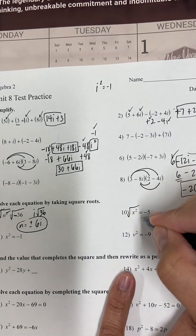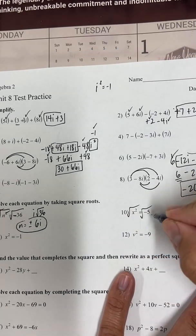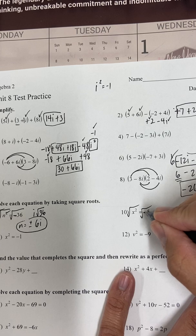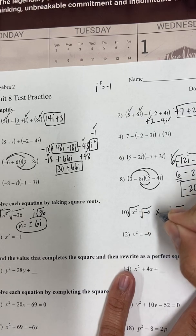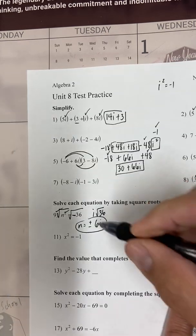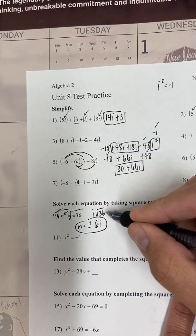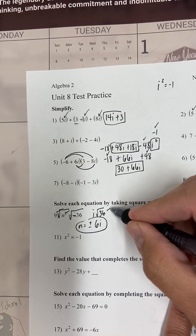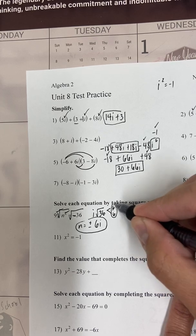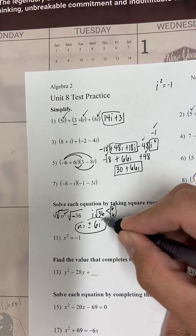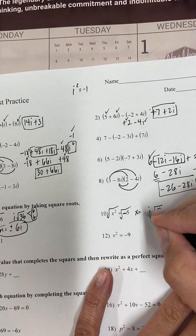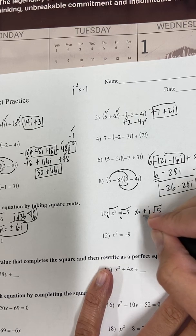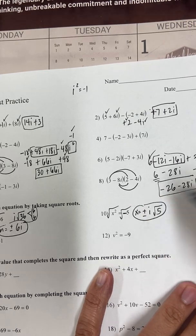Number 10 — take the square root of both sides again. If you have a negative inside the radical, it will produce an i. The square root of 5 cannot be simplified further — unlike 36, which breaks down to 6 times 6. Since 5 cannot be broken down, leave it inside the square root and write plus or minus i times the square root of 5.